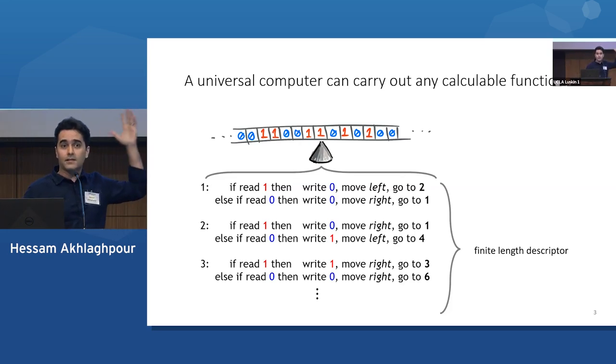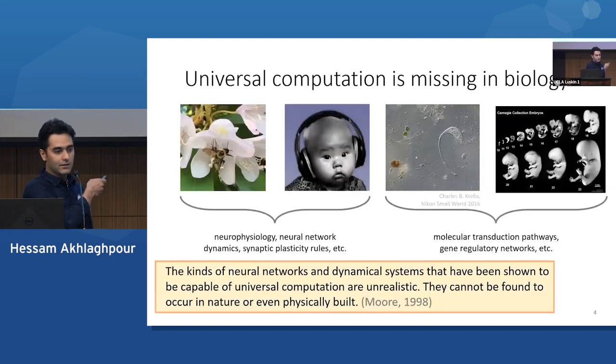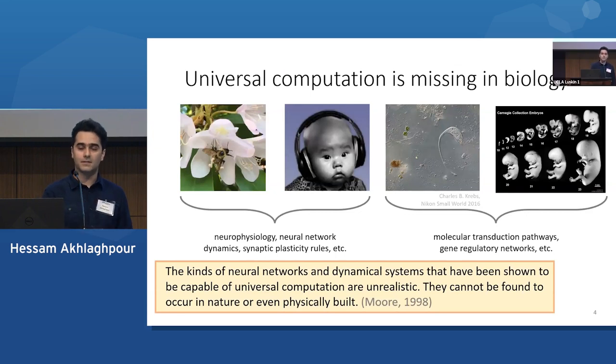So this insight led to the birth of computer science. It's revolutionized modern technology, but what about biology? What about its implications for natural systems? And I want to make a claim here that currently the universal computation system is missing in biology.